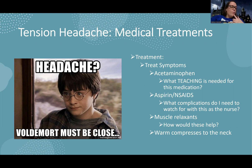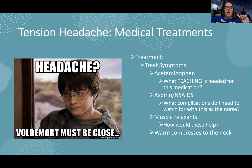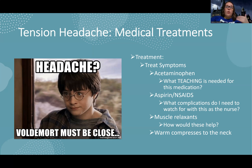The complication to watch out for with aspirin or NSAIDs is bleeding, so we want to be careful about that. Muscle relaxants can also help because this is more of a musculoskeletal pain — if it's tense and tight, relaxants will help relax those tense, tight muscles and therefore help with the pain. Even just warm compresses to the back of the neck can help, because it's going to relax that muscle tension.